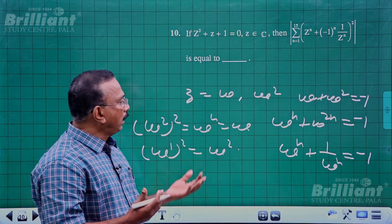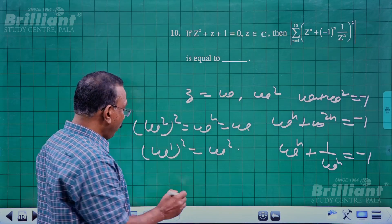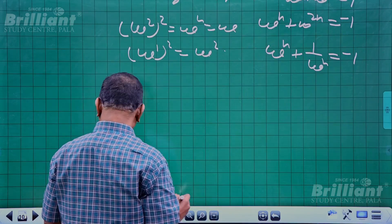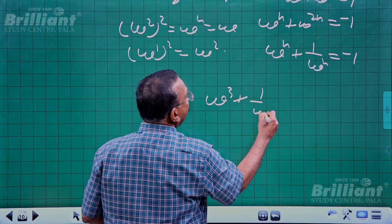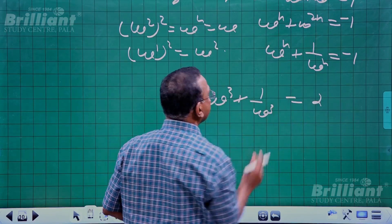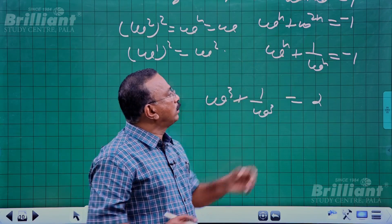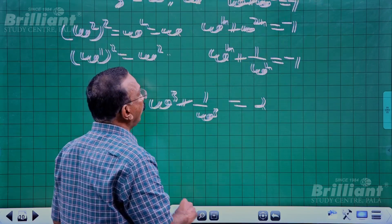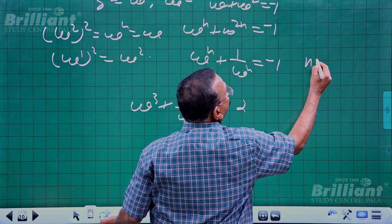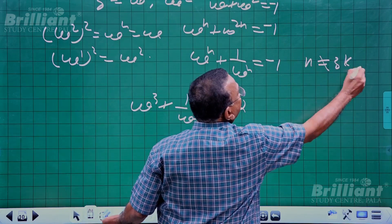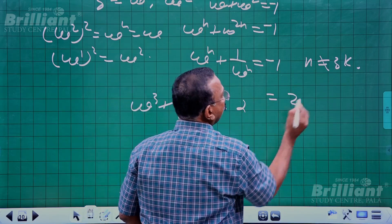When n is a multiple of 3, ω³ = 1, so ωⁿ + 1/ωⁿ = 1 + 1 = 2. For n not a multiple of 3, ωⁿ + 1/ωⁿ = -1.